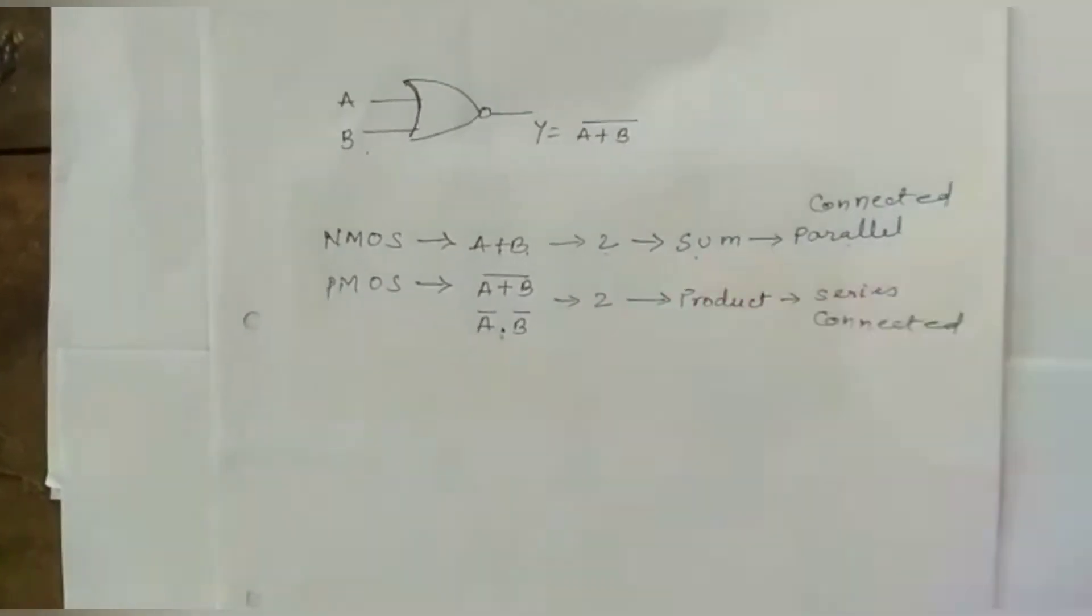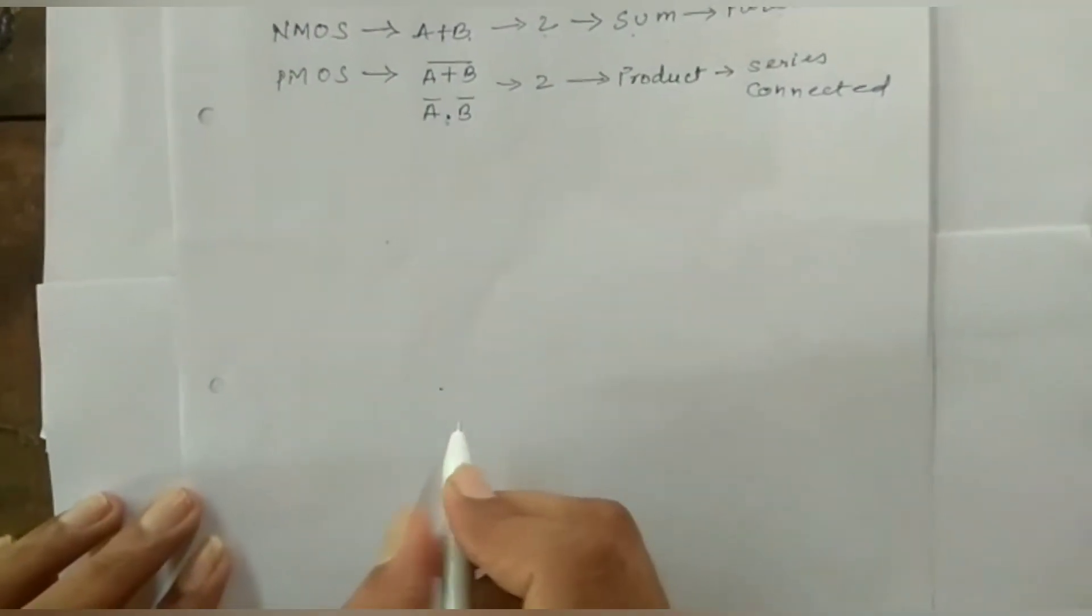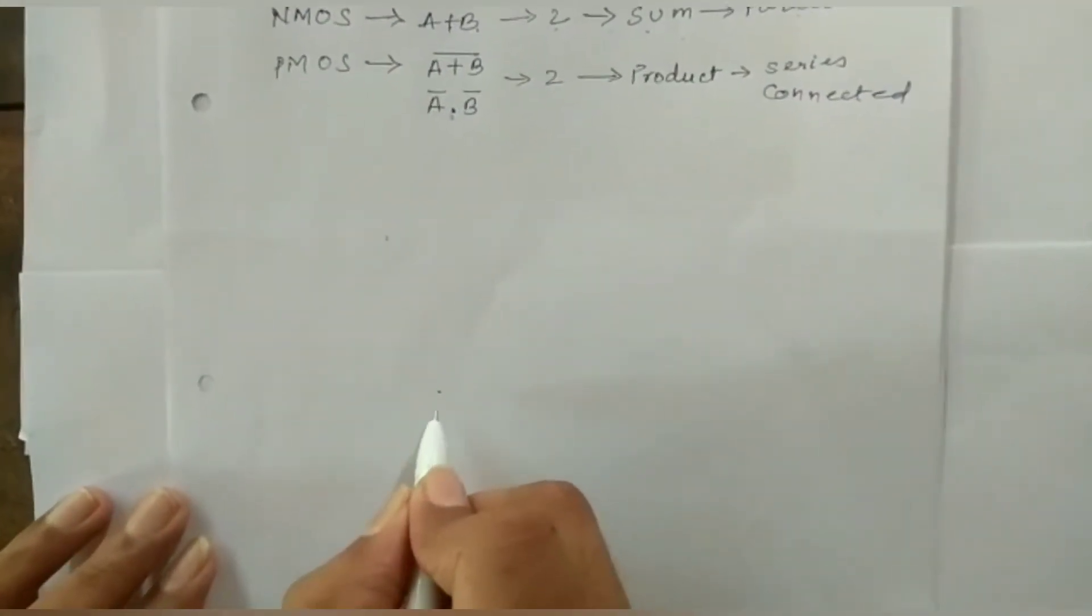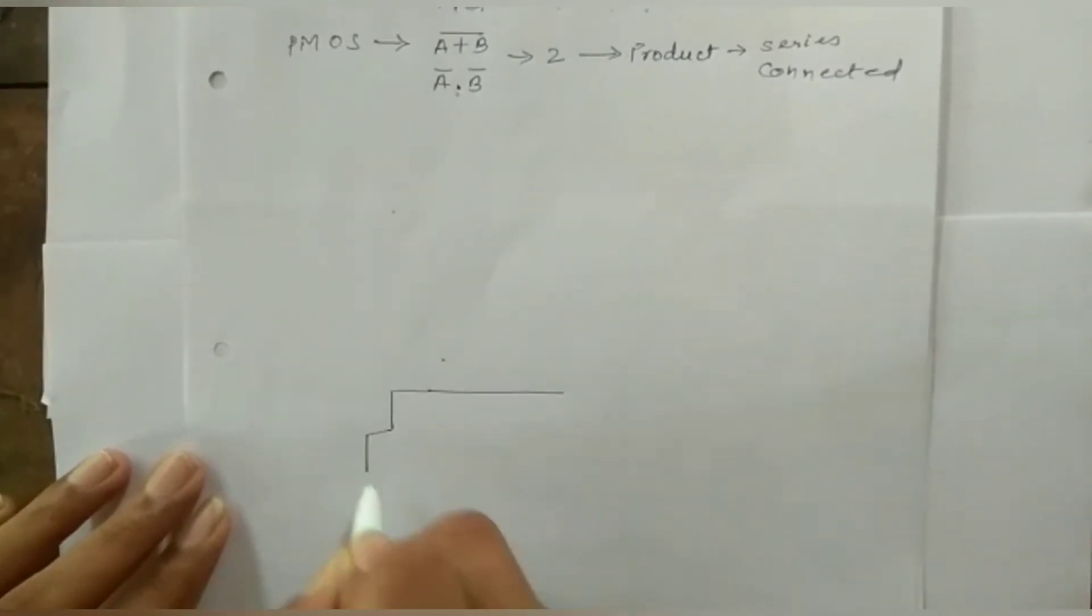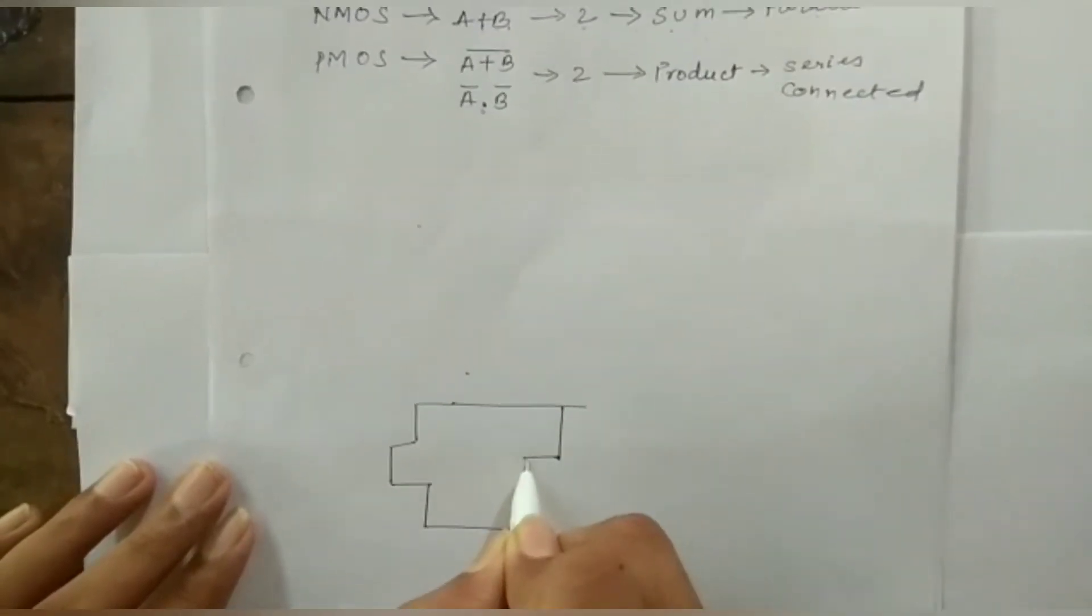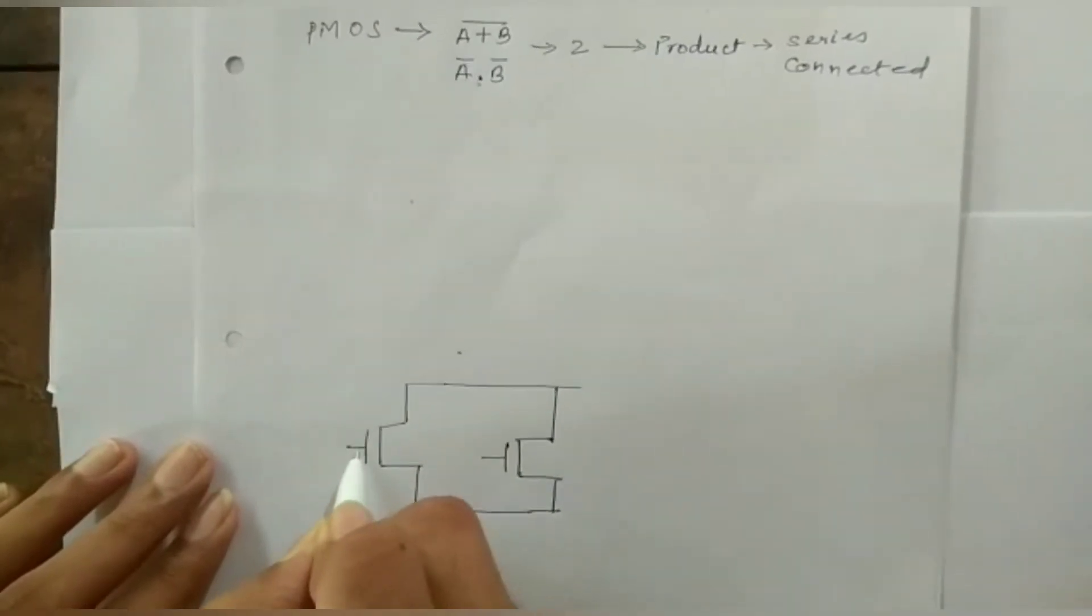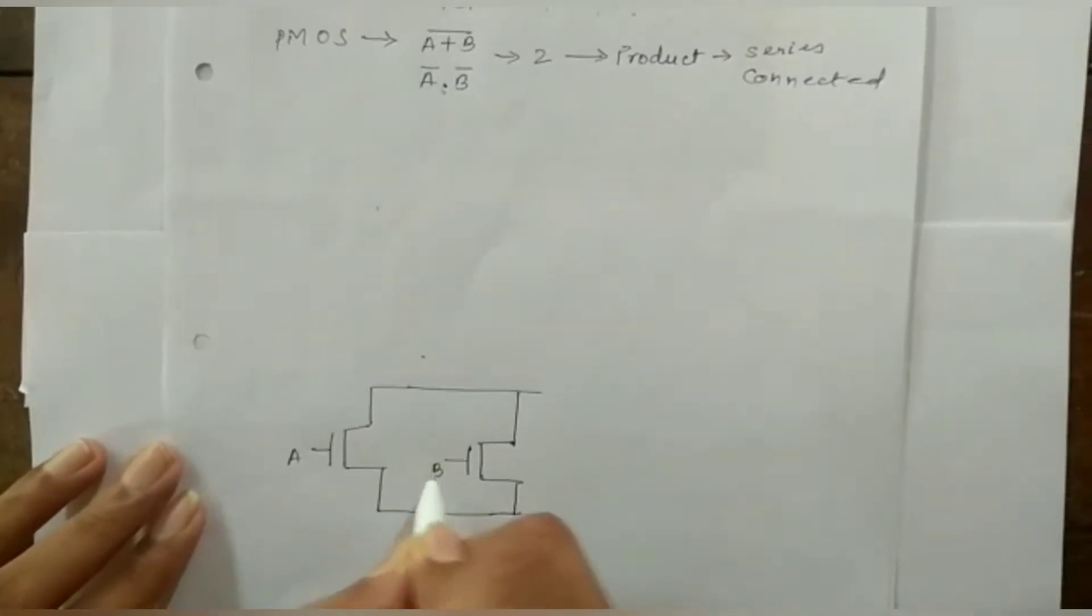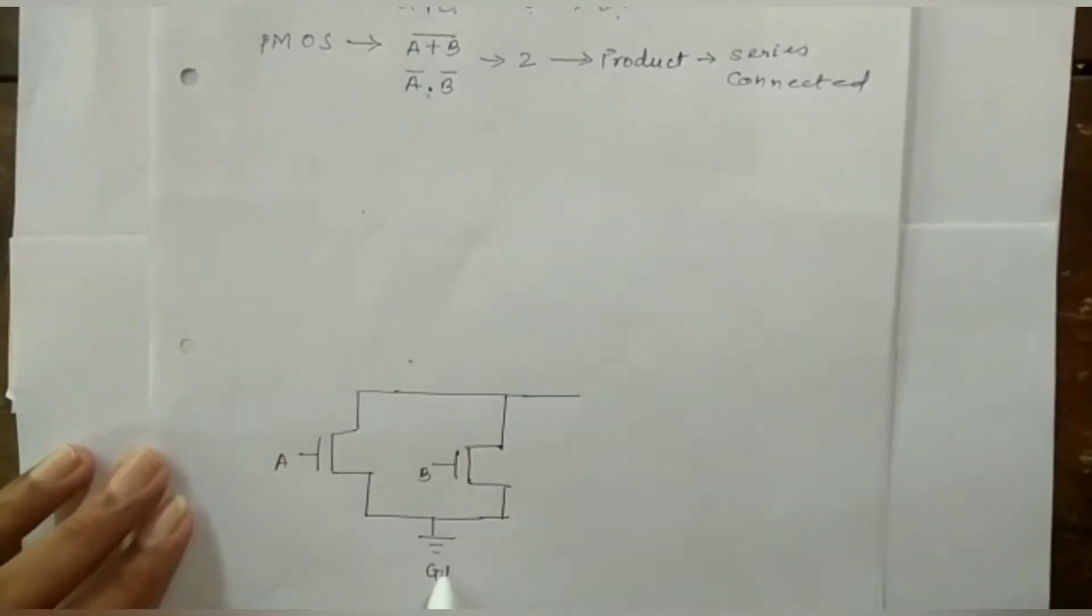Now we will draw the CMOS NOR gate. First we will draw the NMOS. This is connected to GND.